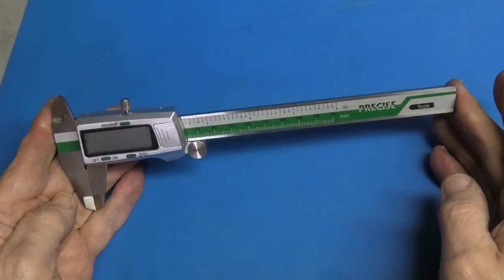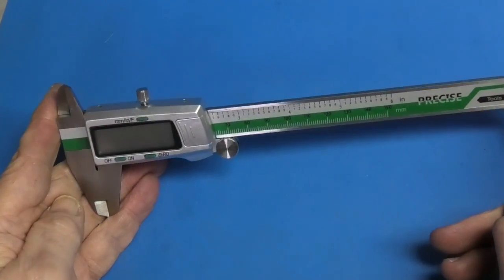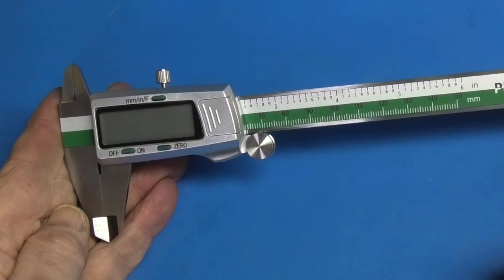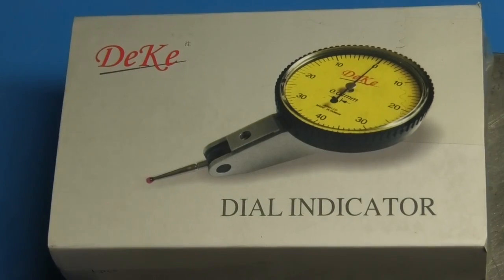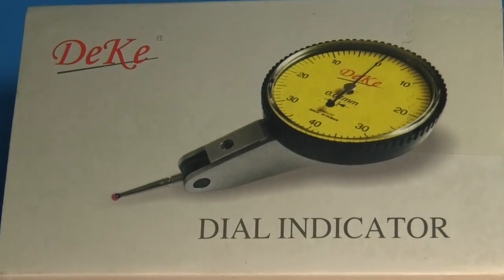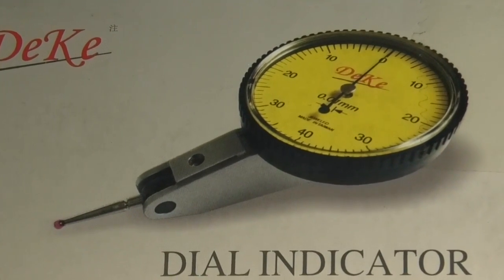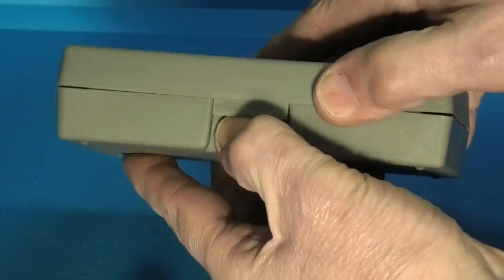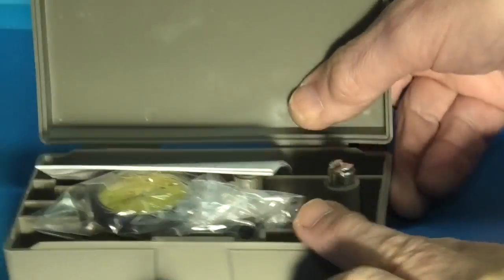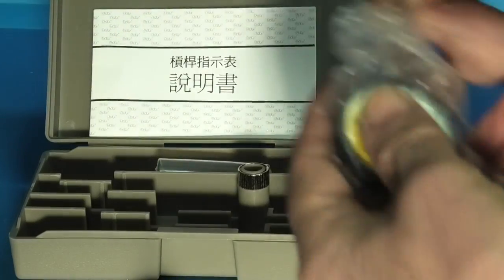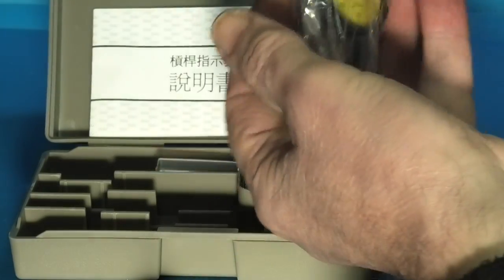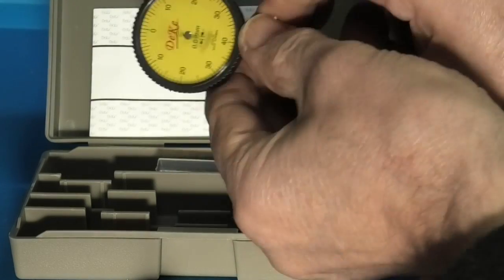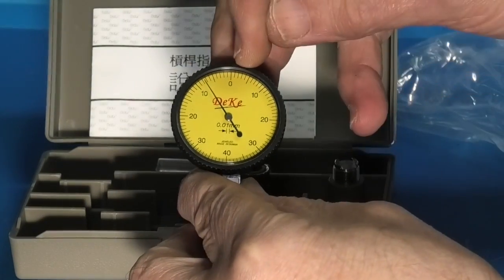In today's tool review we have two items, the 6 inch digital caliper and the second item is this dial indicator. We'll start with the dial indicator. It comes in this plastic box, instructions, the dial indicator and this is a metric dial indicator.